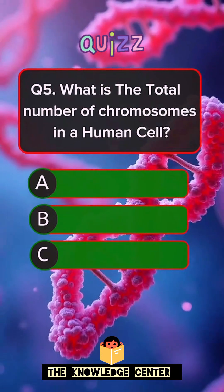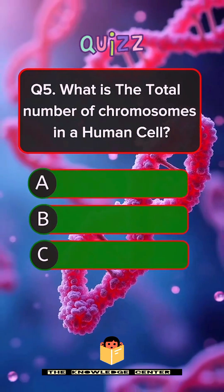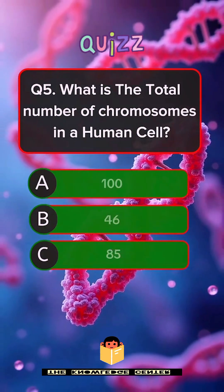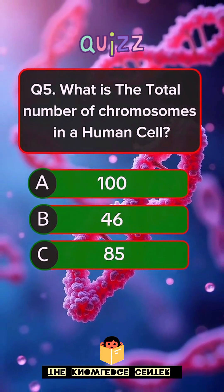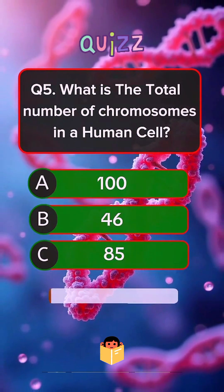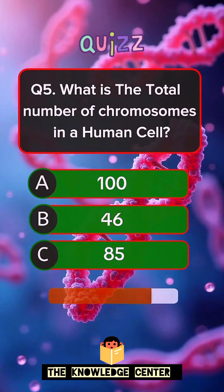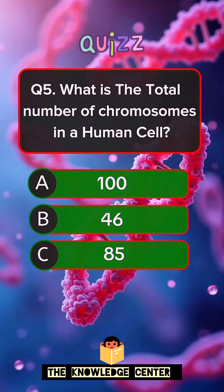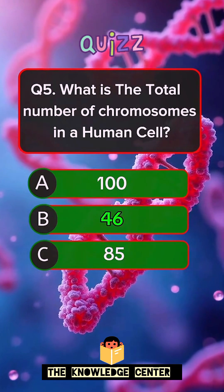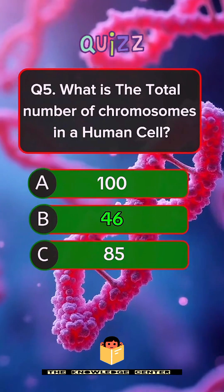Question 5. What is the total number of chromosomes in a human cell? Answer B. 46.